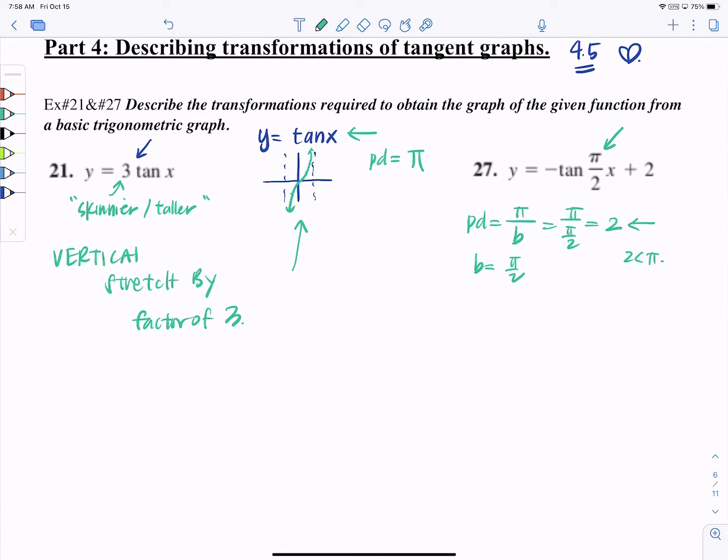Now 2 is less than π, which means it got—that means in order for us to complete this cycle here, it takes a shorter amount of time. That means it's going to get squeezed in, the vertical asymptotes kind of shrink in.